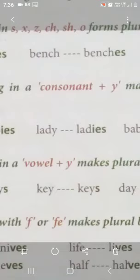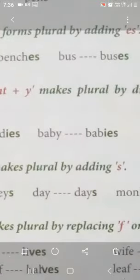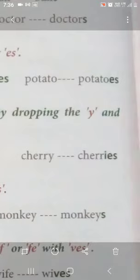Same way, lady — y se end kar raha hai, y se pahle consonant d hai — so lady will become ladies. In place of y, we have added ies. Again baby becomes babies — y hata diya, ies add kar diya. Cherry will become cherries — y hai, usse pahle consonant r diya hua hai, toh we drop y and add ies: cherries.